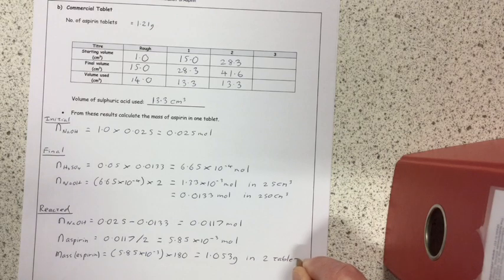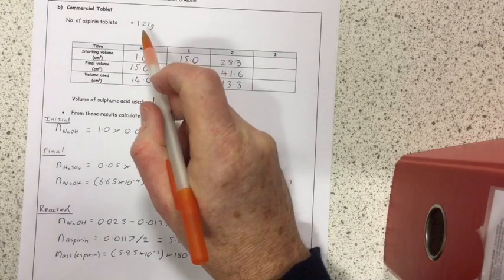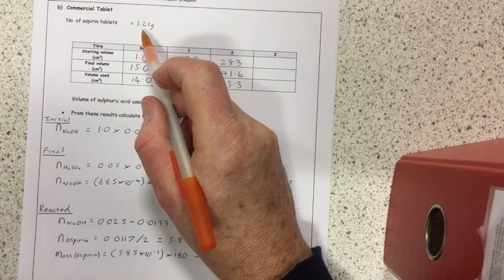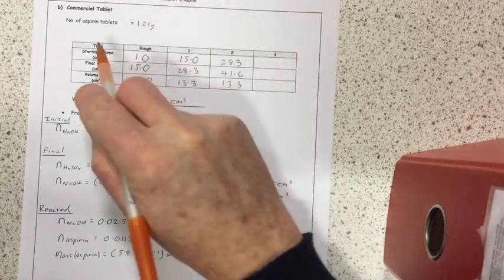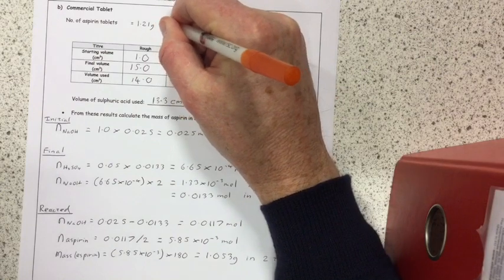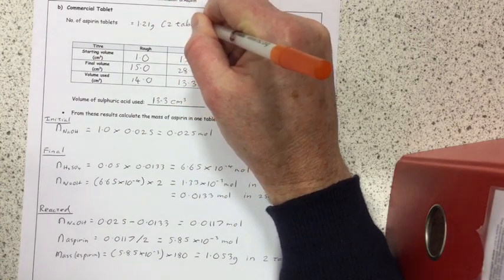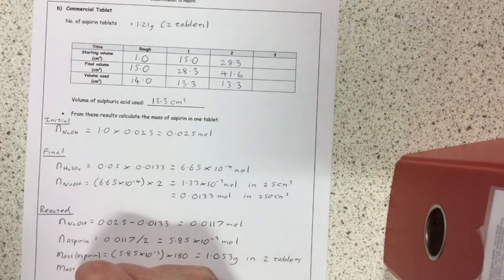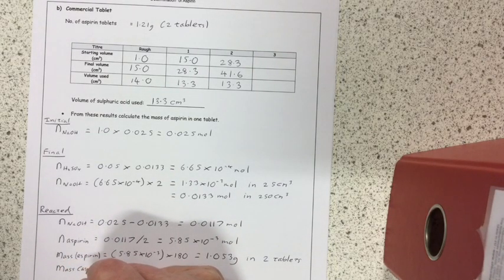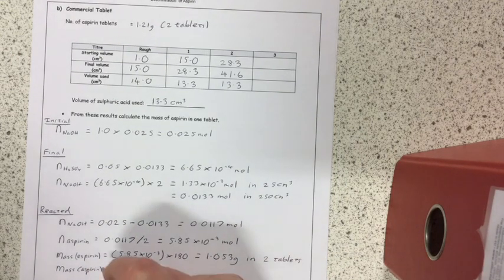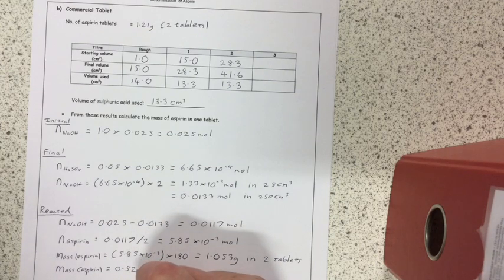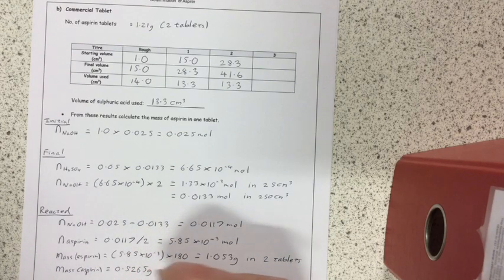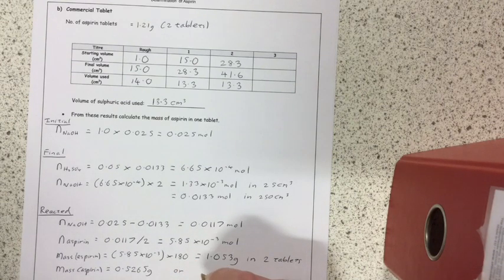Which reminds me, up here I'd put the mass of aspirin, but in fact, what we were supposed to put up here was the number of aspirin tablets, so maybe I should just put in brackets, two tablets. So, the mass of aspirin in one tablet is just that number divided by 2, which is 0.5265 grams, or 527 milligrams.